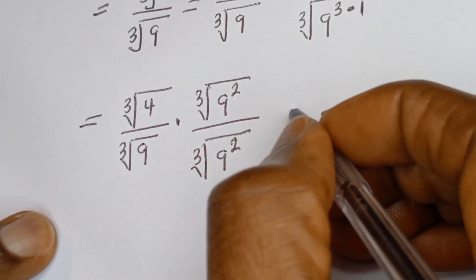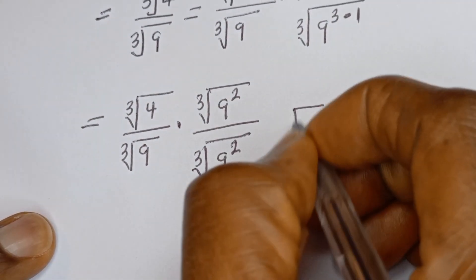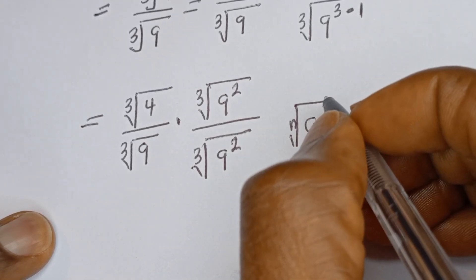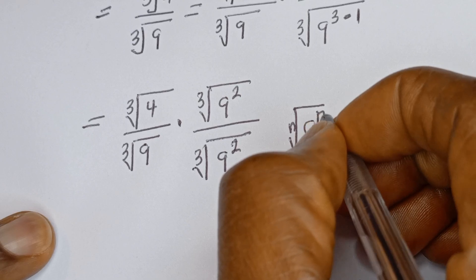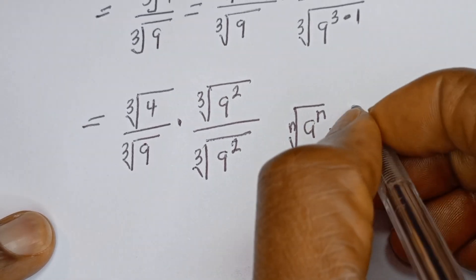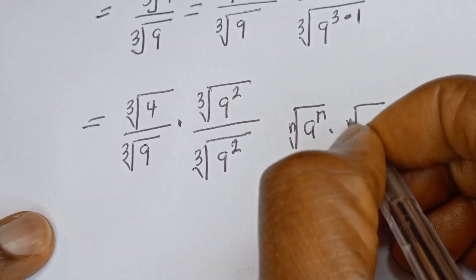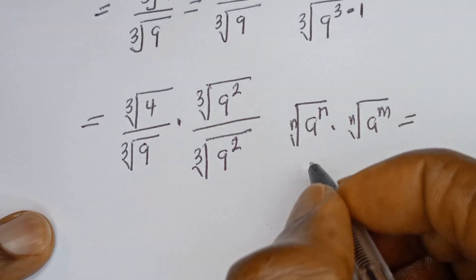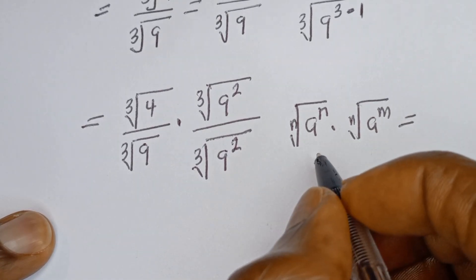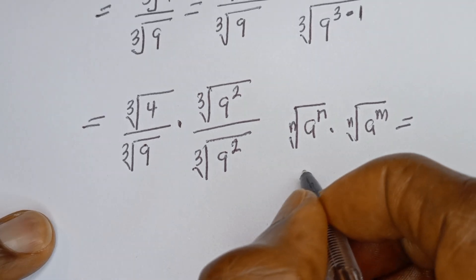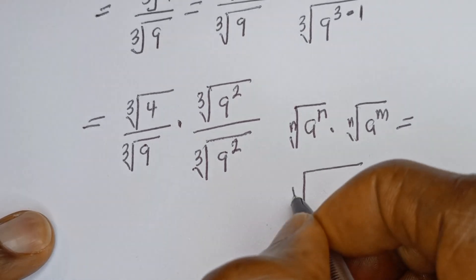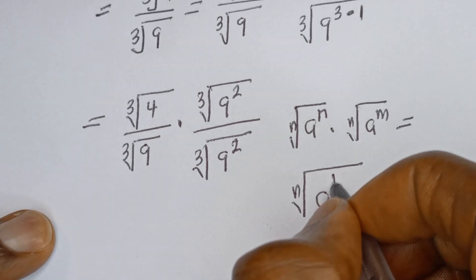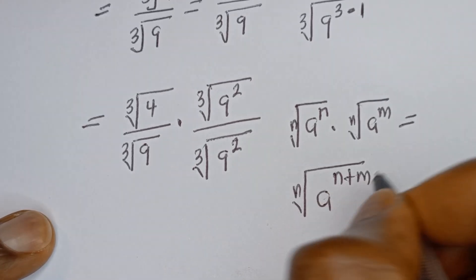Take note of this: if you have the nth root of a to the power of n, multiplied by the nth root of a to the power of m, then this is equal to the nth root of a to the power of n plus m.